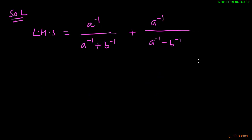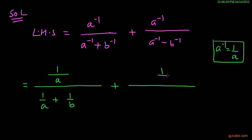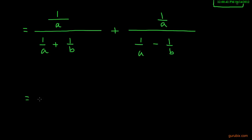We know that a inverse is equals to 1 over a. We shall use this formula in the first step. Then it will be equals to 1 over a, over 1 over a plus 1 over b, and here it will be 1 over a, over 1 over a minus 1 over b.